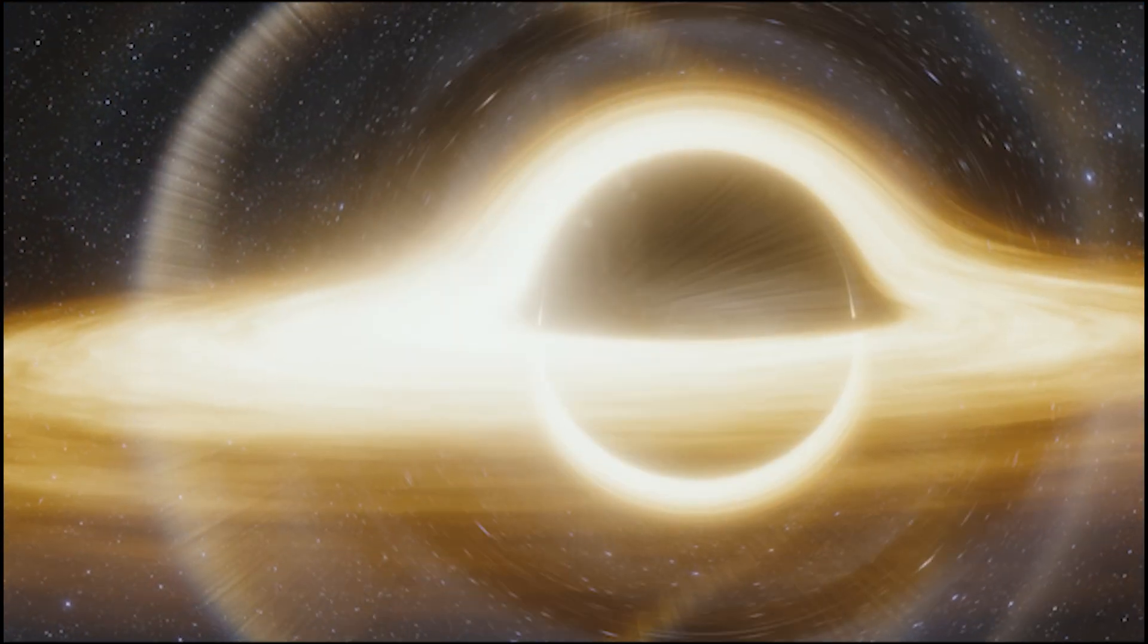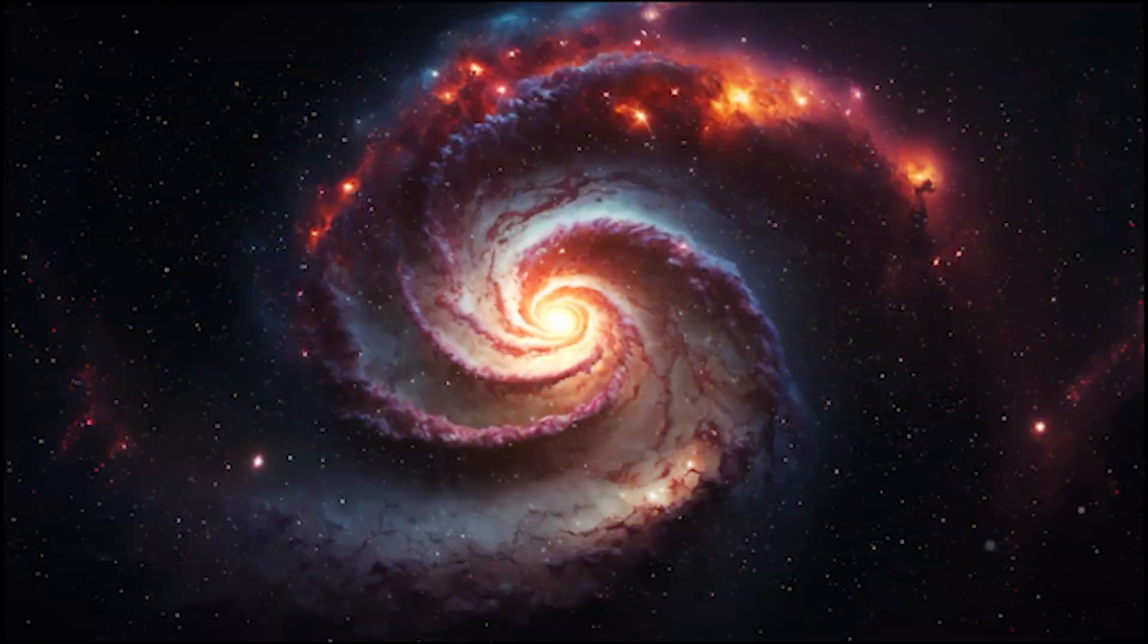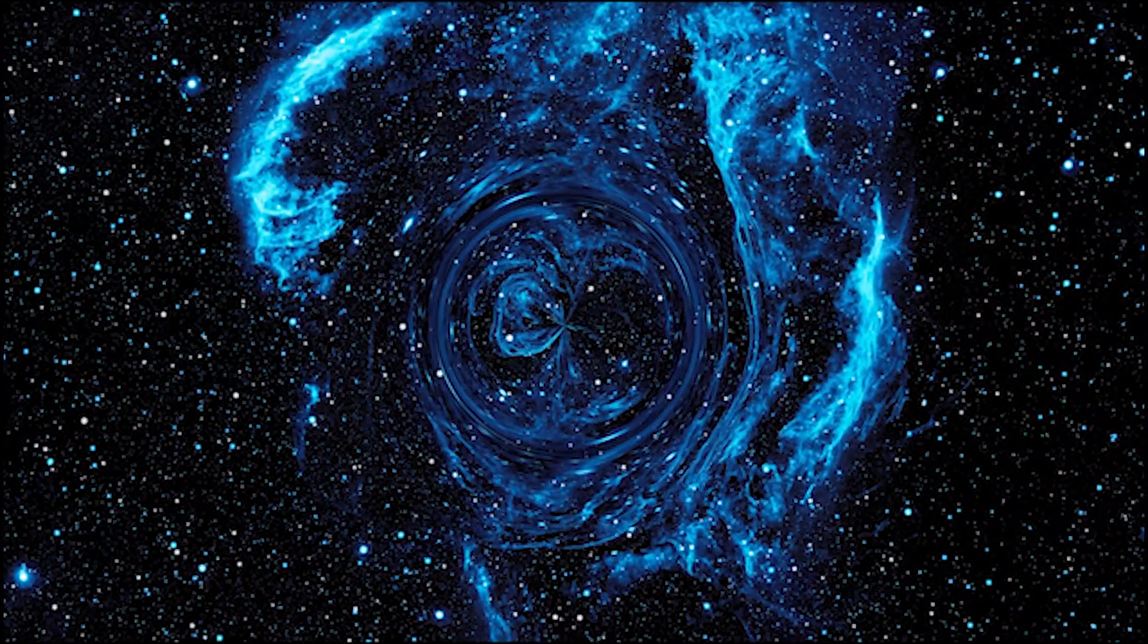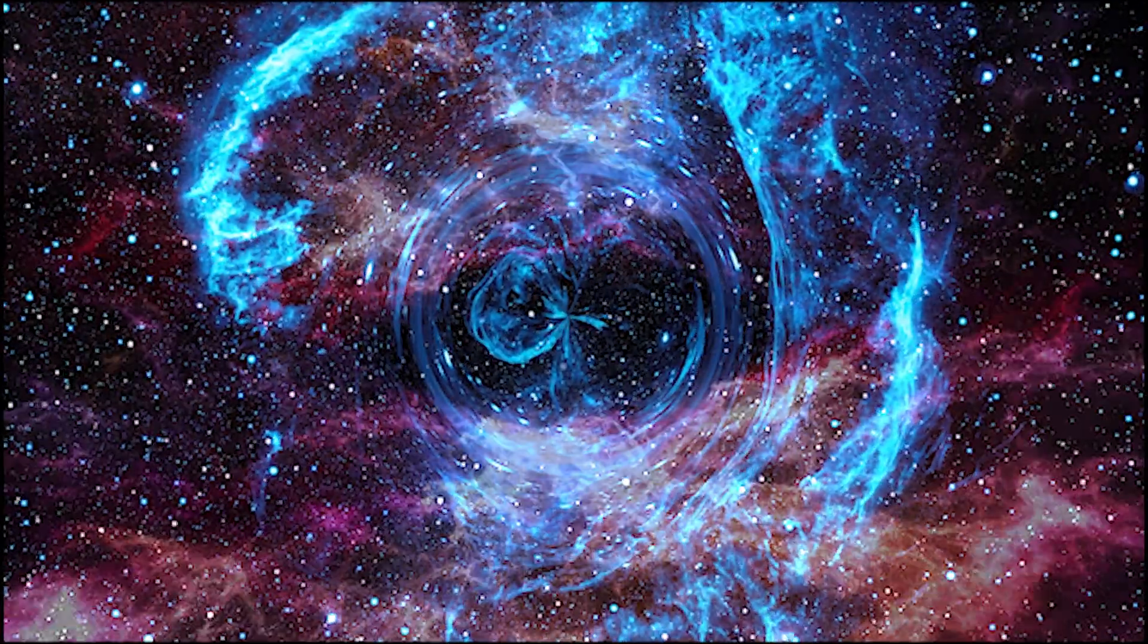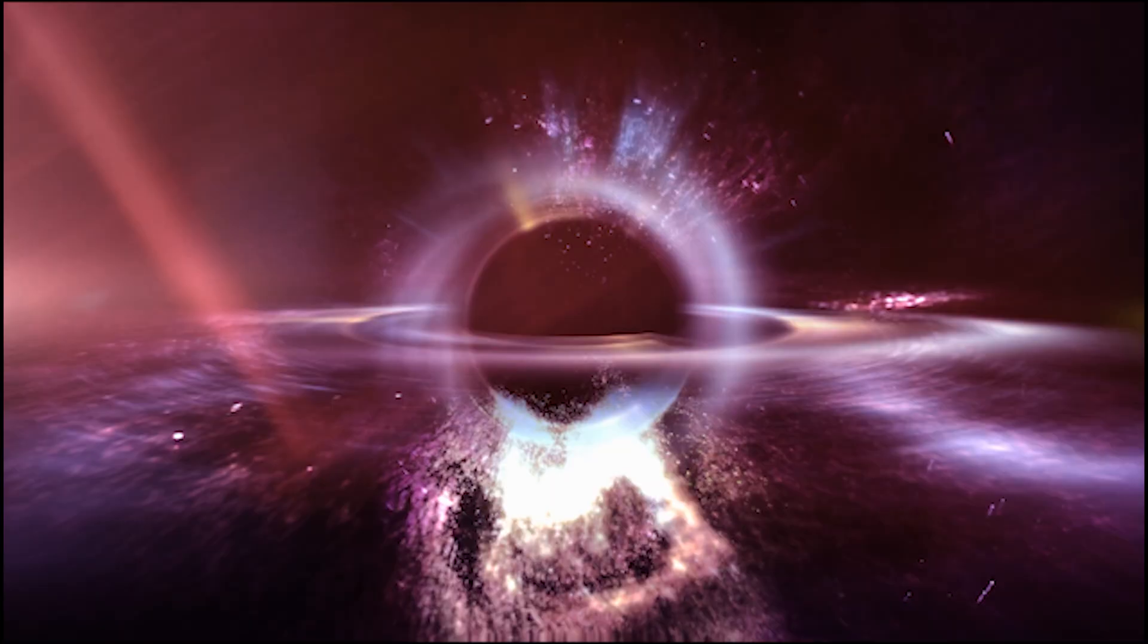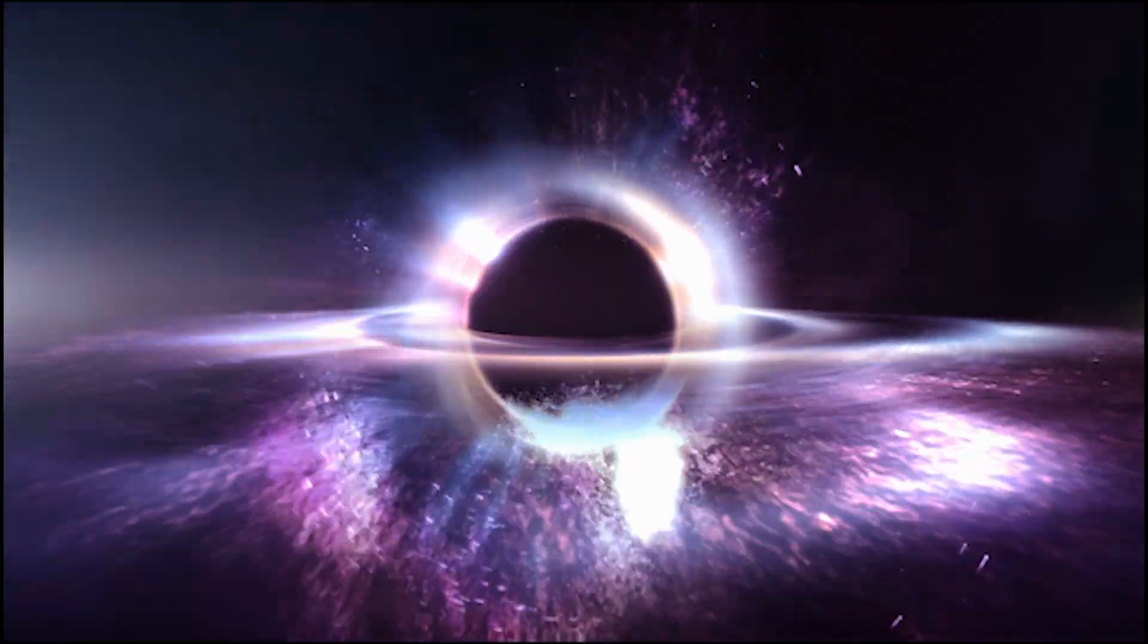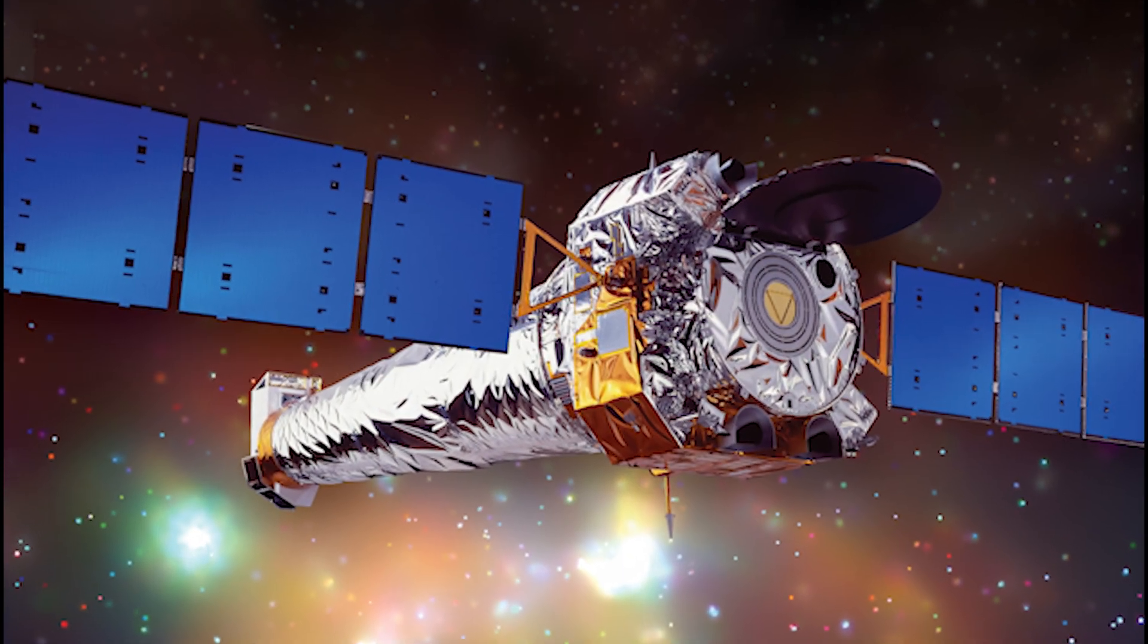If black holes can indeed form directly from gas clouds, it implies that the early universe had conditions that allowed for the rapid accumulation of matter in dense regions. This process leads to the formation of superheated, X-ray-emitting gas around the newly formed black hole, a phenomenon that has now been observed by both the JWST and the Chandra X-ray Observatory.